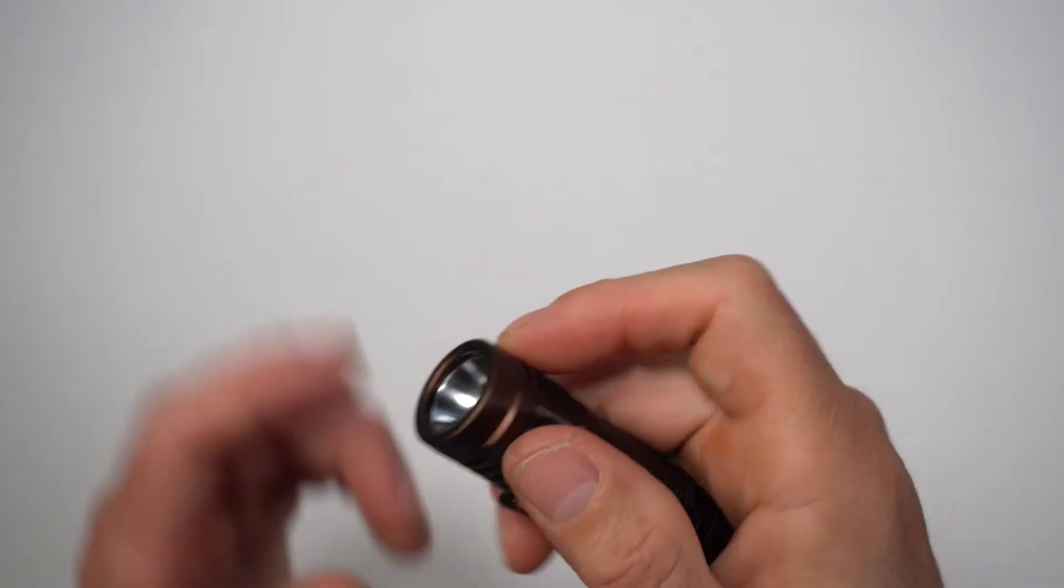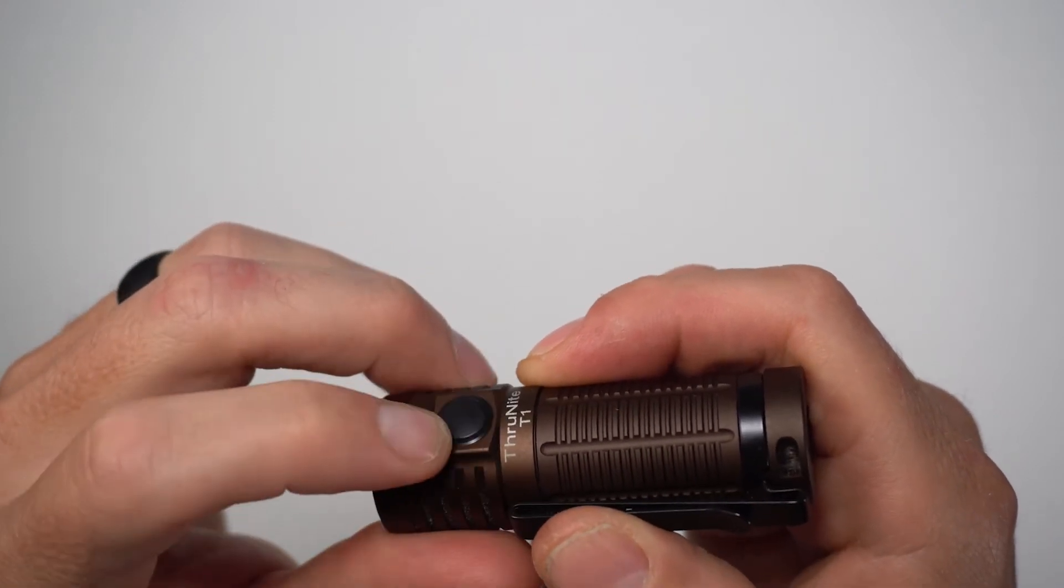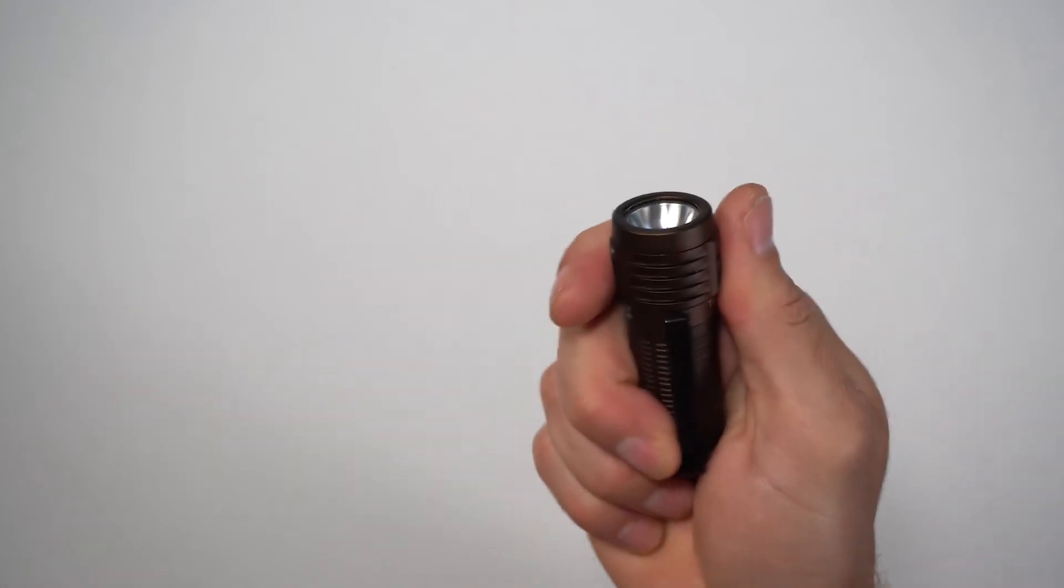So one other little thing that I found in use is the button is directly across from the USB charging port. And when you pull it out of the pocket, the rubber feels very similar. And so a lot of times I would actually push the charging port and nothing would happen. I wish that the button had some sort of pattern or little nubs on there so that I could feel them with my thumb when I pulled it out of my pocket. So I do like the interface a lot. I think that the infinite ramping is really nice. It's very similar to the Olight in its usage, its form factor.